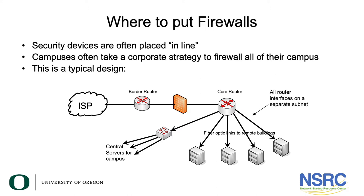The next topic is where to put firewalls. This is a very typical design — many campuses use this, including campuses all over the world. The firewall in this position will protect all of campus from the outside world. That probably works in a corporate environment where every computer is controlled, managed, people don't have administrator rights, they can't install things, and there's all kinds of antivirus software. But campuses are not like that — people bring computers from home, students are on wireless, people have phones.